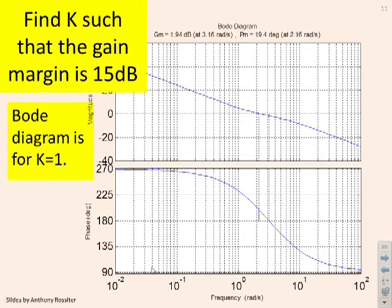Right, what about this question? Find K such that the gain margin is 15 decibels. And you're given that this boat diagram has got K equals 1. So remember, all we're doing is changing the gain. So first, I'm going to look and find out, well, where's the phase crossover frequency? It's about here. What's the current gain margin, which is calculated in this region? Well, we've given it to you here in case you didn't spot. The current gain margin is 2 decibels.